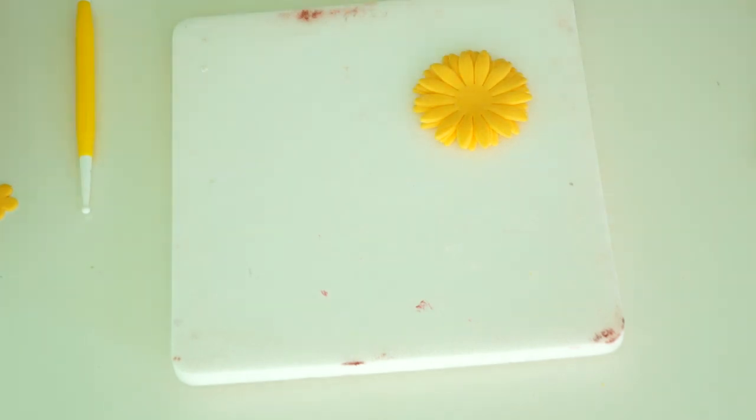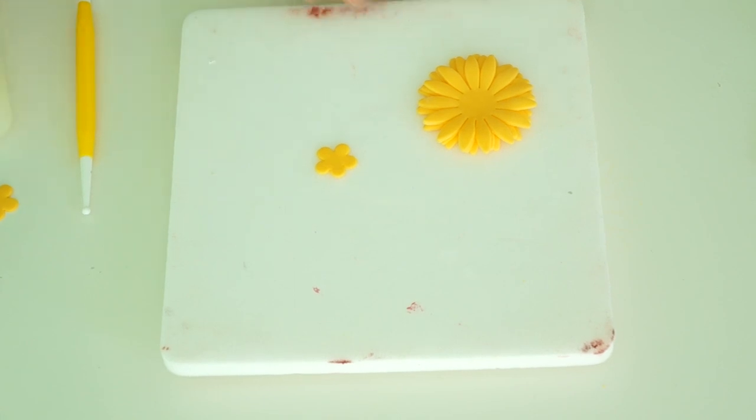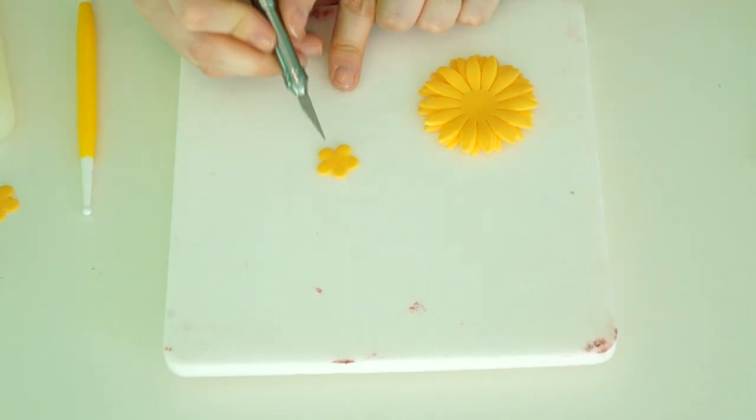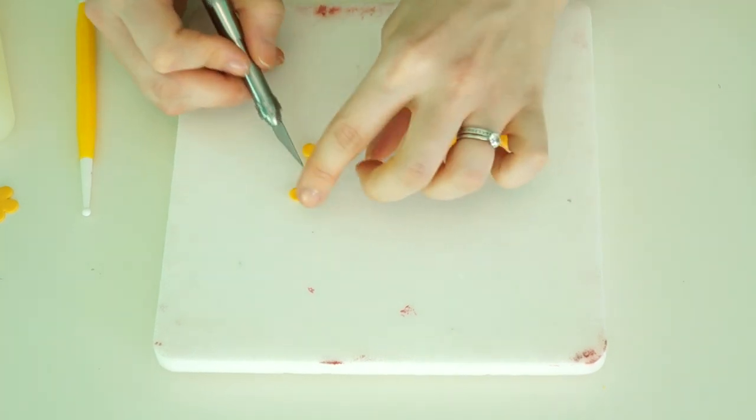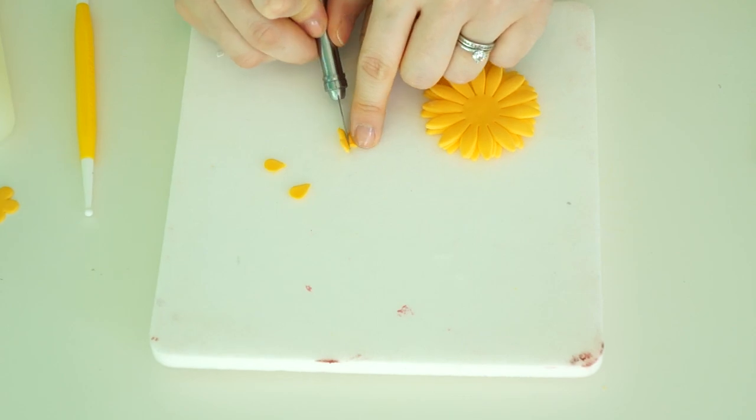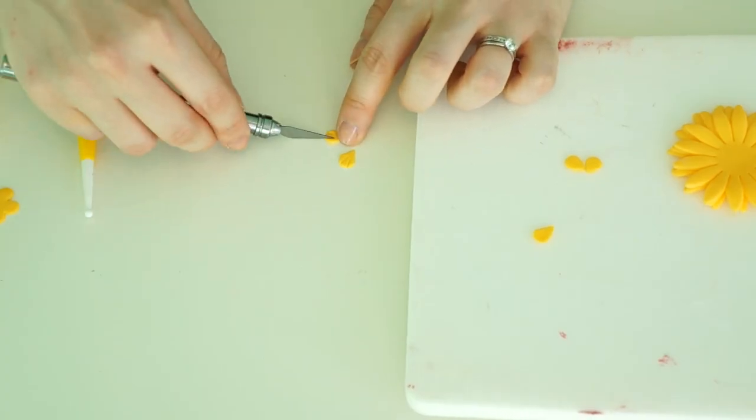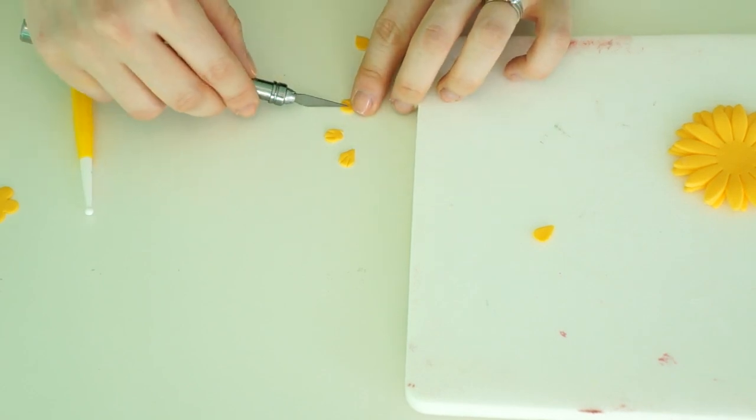Now what I'm going to do is I've actually cut out some of the small five petal flowers and I'm just going to cut those to separate them into little teardrop shapes. Using my craft knife, you just cut two little slots into those so it makes three little pieces.